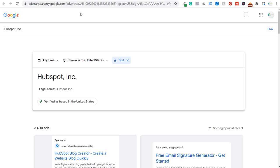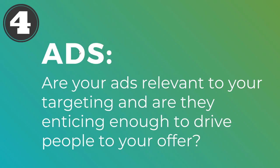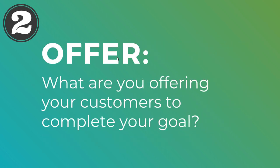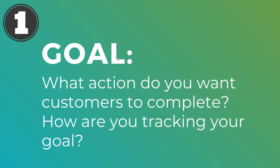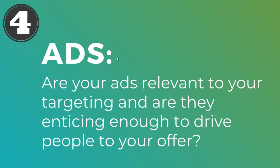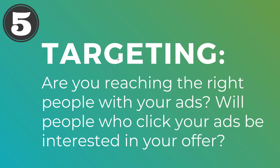HubSpot tries to get people in the door with their free program, and once you're in, they keep promoting their upgraded model. So the flow is: people see your ads, click them, see your landing page, which has some type of offer, and there's a goal you want them to take — booking an appointment, calling your business, filling out a free trial form, or completing a purchase and reaching an order confirmation page.